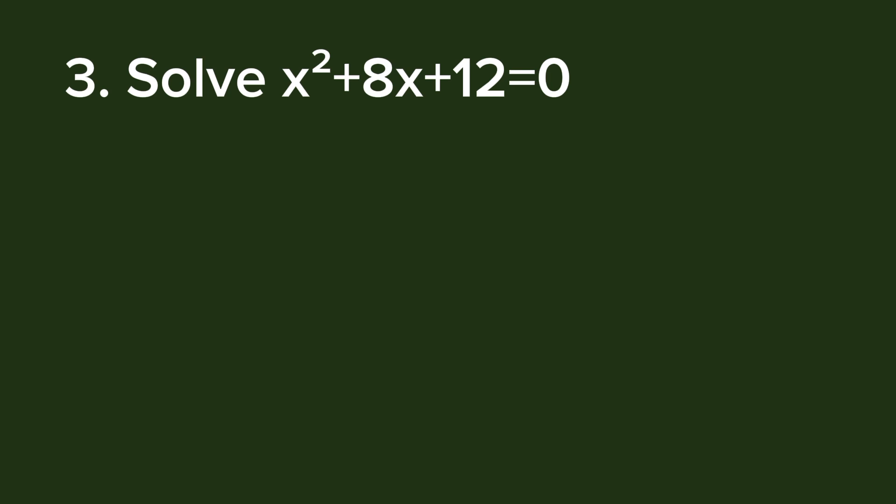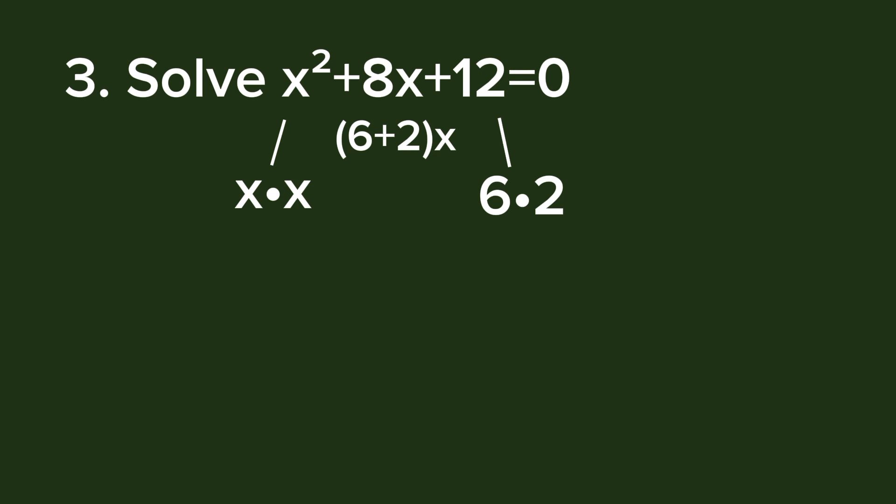Solve x² + 8x + 12 = 0 by factoring. We begin factoring x², that is x times x. We factor 12 and must ensure the sum of the factors equals 8, the middle term coefficient. The factors of 12 are 6 and 2, and 6 + 2 = 8.